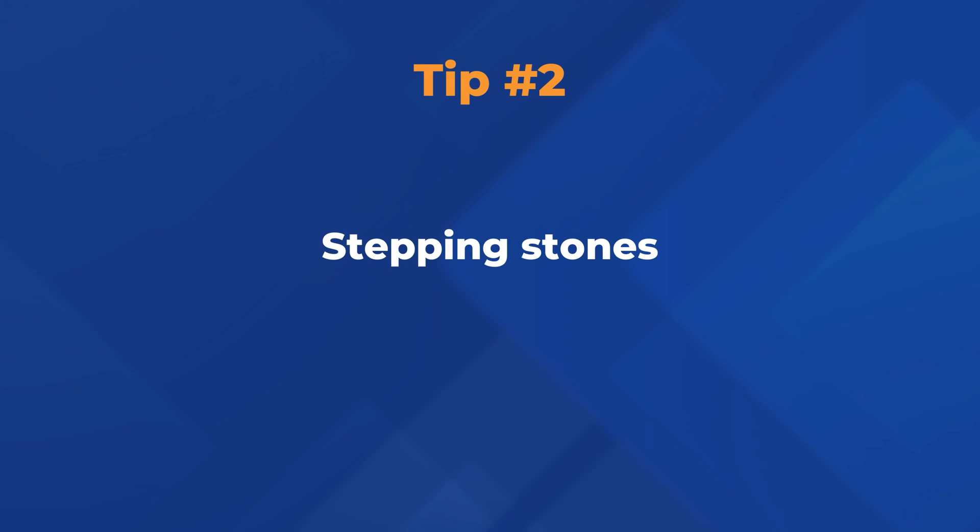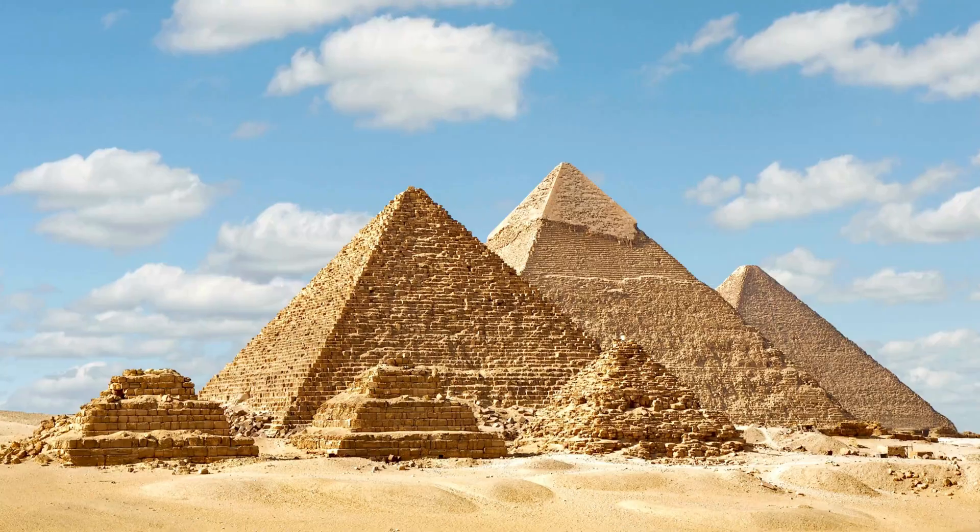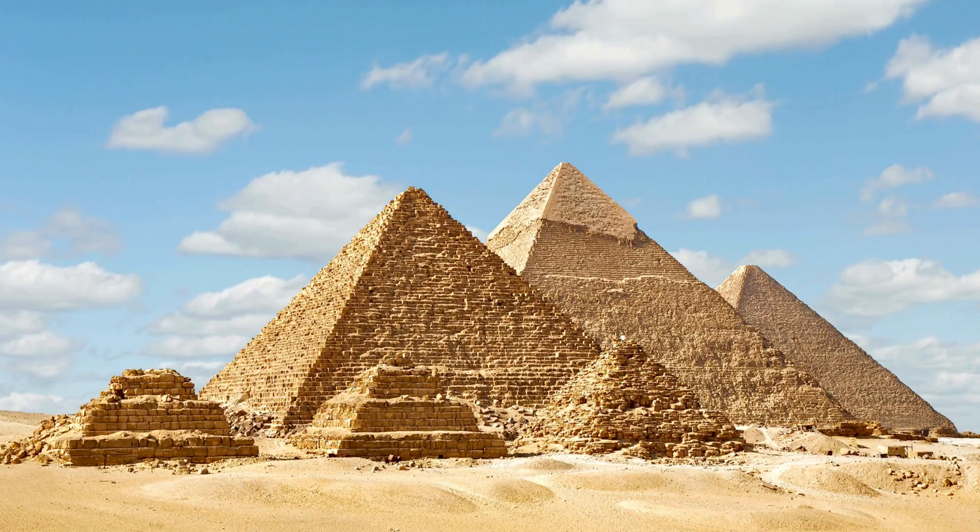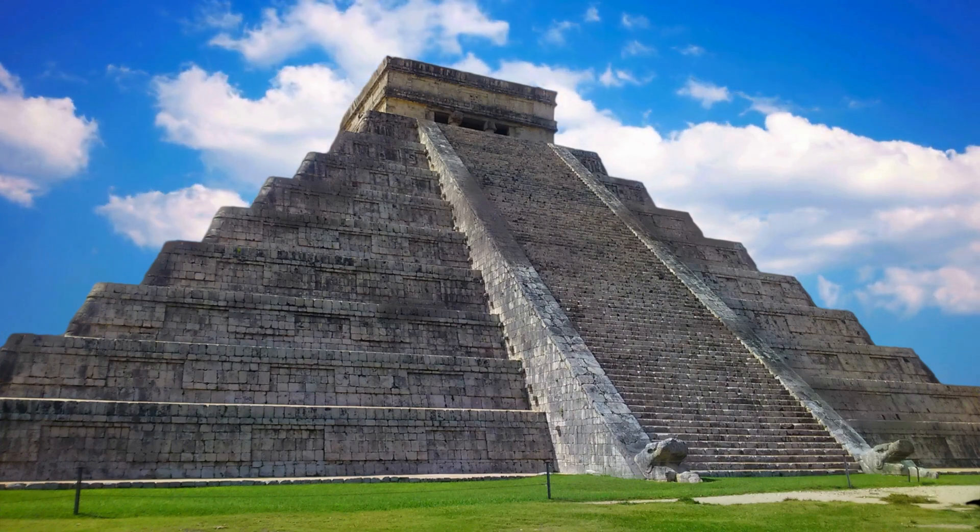The second tip is what I would call stepping stones. Continuing with the visual image of a pyramid — because visualizing it will help you understand and implement this — most pyramids have steps. There are stepped pyramids in Egypt and in the Mayan world. Those steps allow people who want to get to the top of the pyramid to do so more easily, because you can take one step at a time.